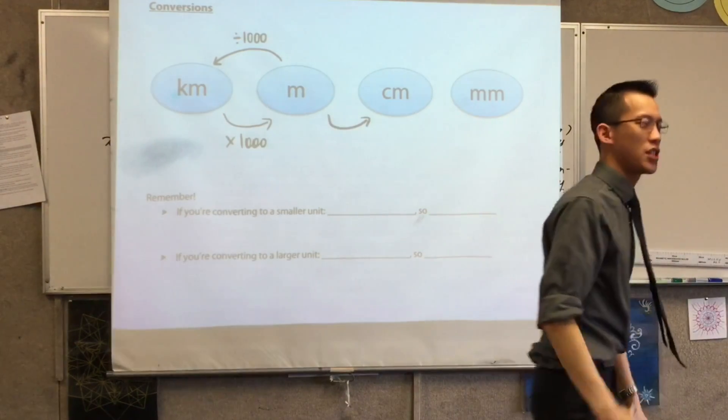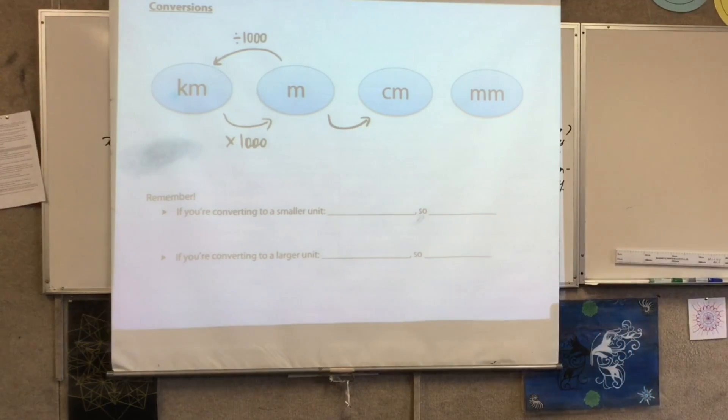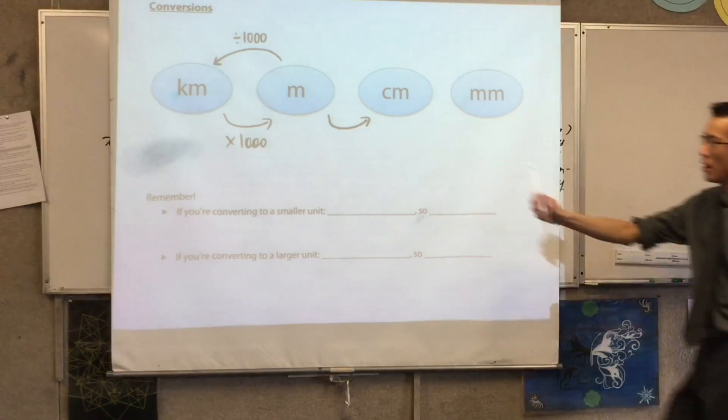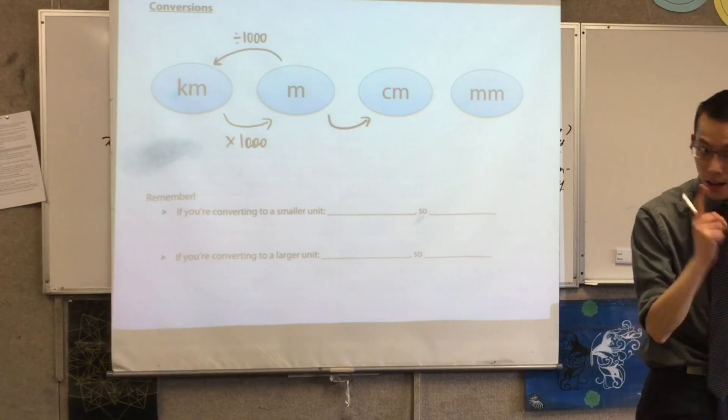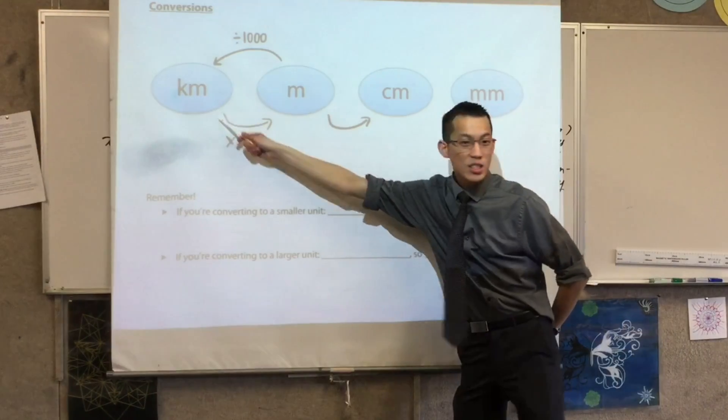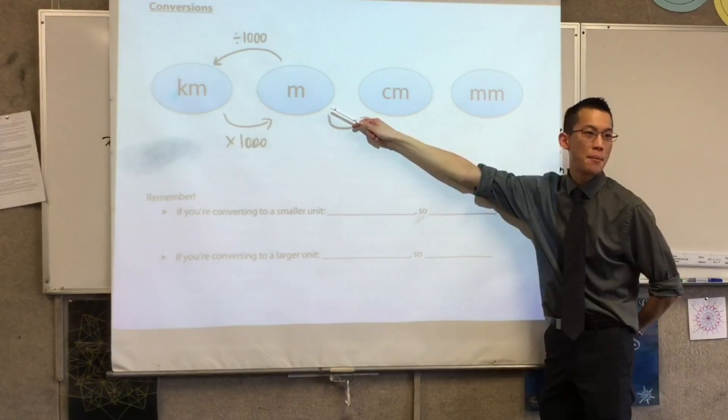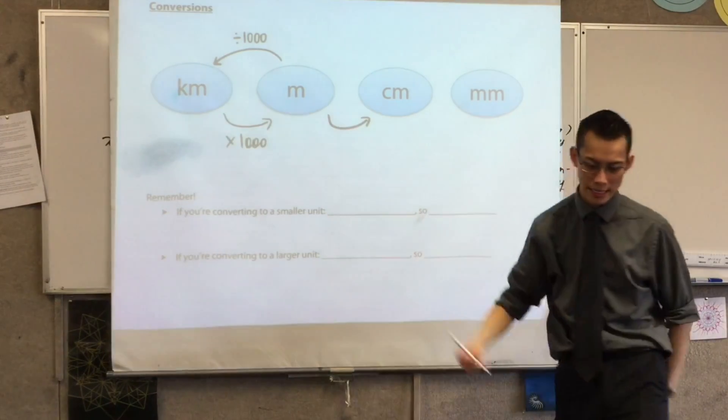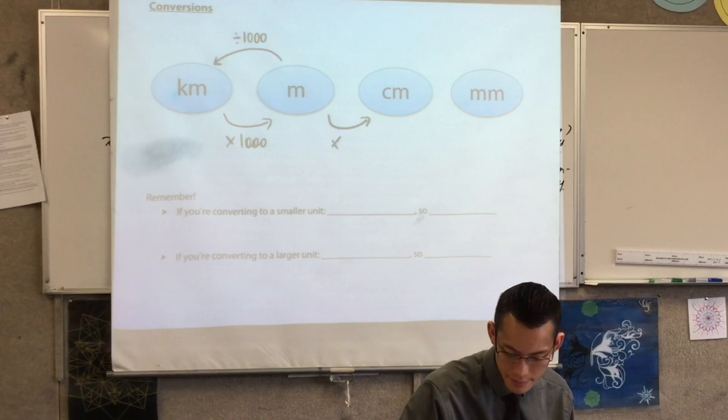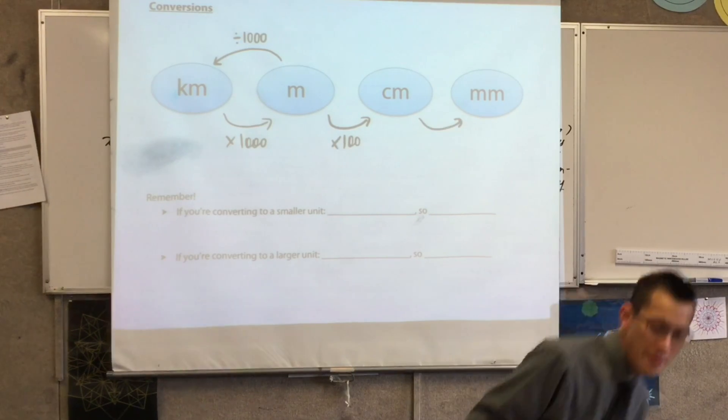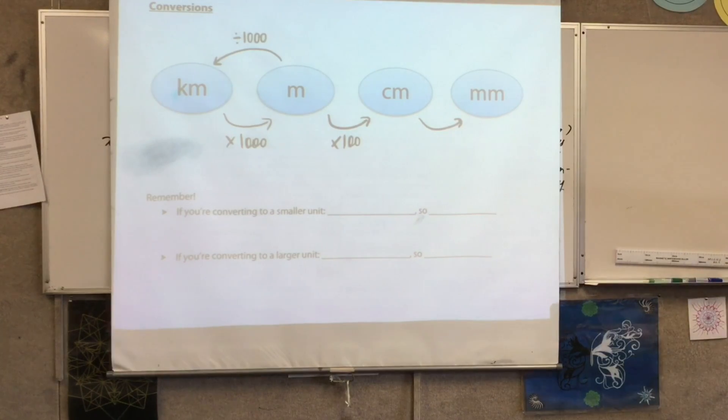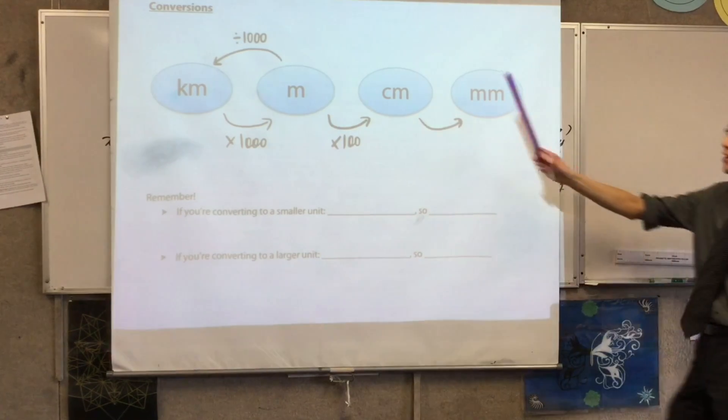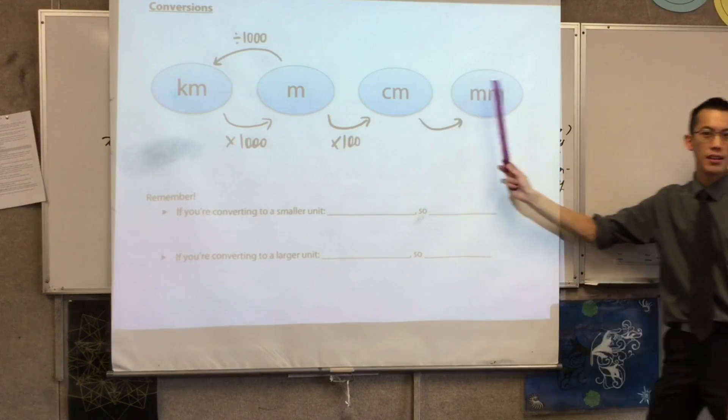If I told you I was 1.78 meters tall, which roughly I am, how would you convert meters into centimeters? What would you do with that 1.78 number? I multiply by 1,000 going here, but I'm going to multiply by 100 here. Does that make sense? And then if I said to you, I've measured a length with my ruler, it's 3.5 centimeters. How would you convert that centimeters into millimeters? Darcy.